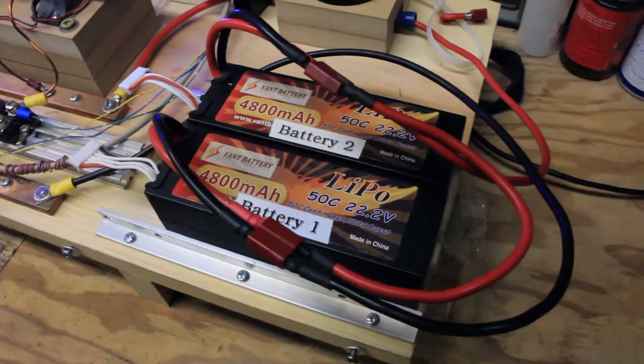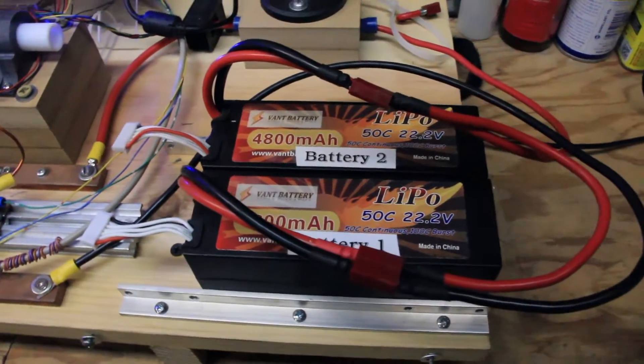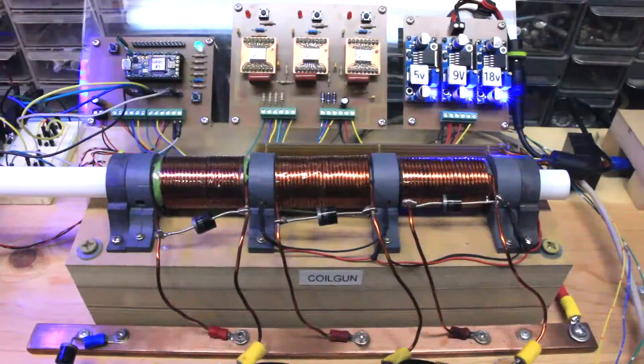It uses high current 48 volt lithium polymer batteries as the power source. The coil gun has three stages.